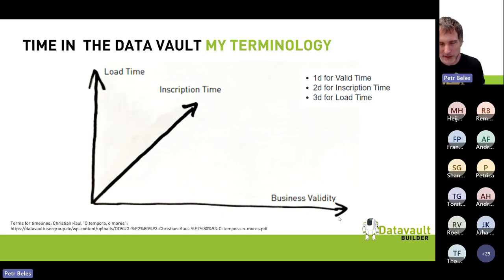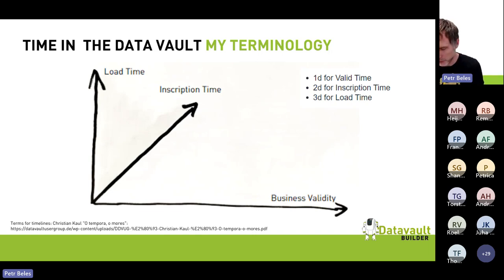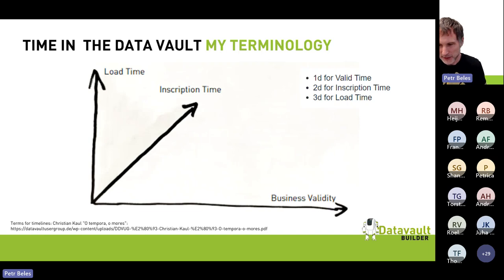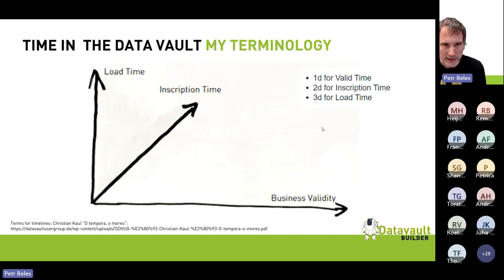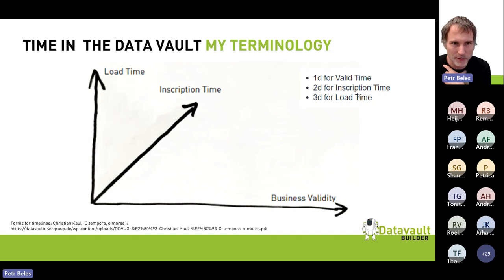One very important timeline is the business validity — from when to when a specific instance of a contract was valid. My assumption is that over the lifetime of an insurance contract there might be different versions, and just because you get a new version it doesn't mean the old one is false or incorrect. It's really a new instance of the same contract with new parameters. One of my clients taught me to call this axis 1D, for the first dimension.